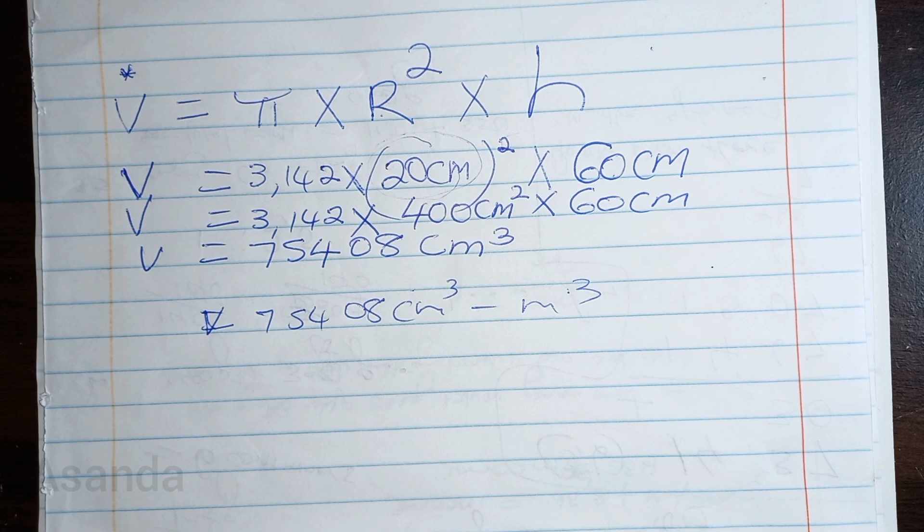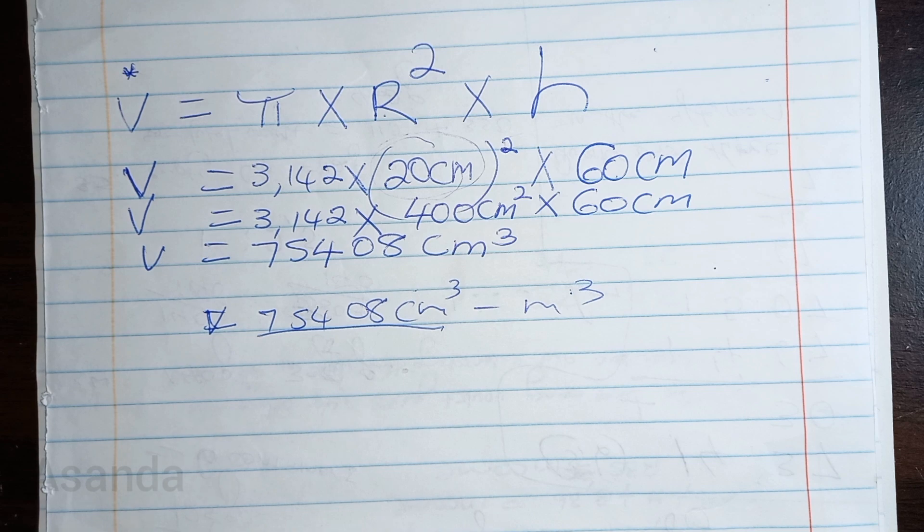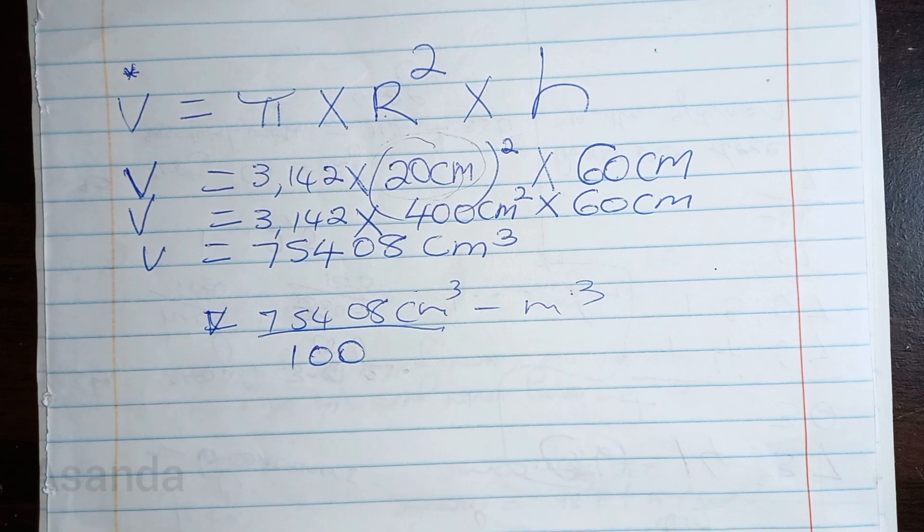Remember: King Henry died by drinking chocolate milk. If we move from centimeter to meter, we are moving from smaller to bigger, therefore we divide. Let's count the zeros—it's going to be one, two. So it's 100. But I pause.